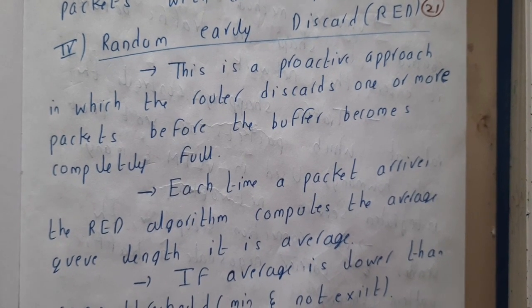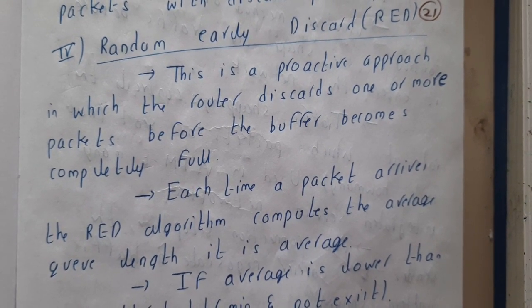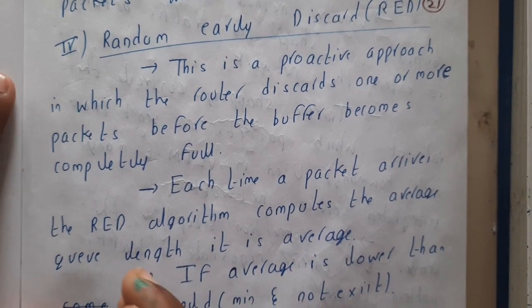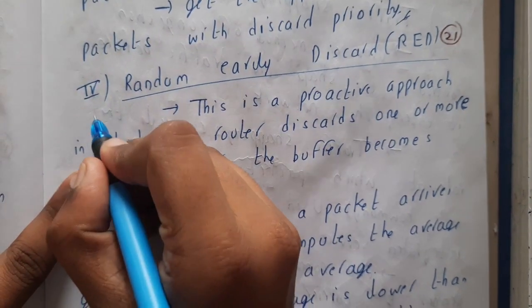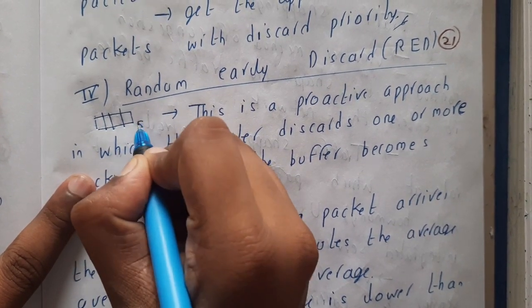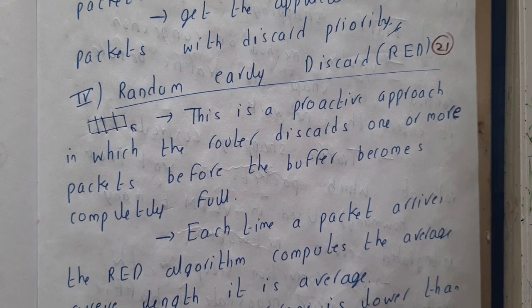Hello guys, we are back with our next lecture. In this lecture, let's go through Random Early Discard. In our last lecture, we went through load sharing, where we have a particular buffer of a particular size. When it becomes completely full, we discard some bits, either the latest coming or the previously stored bits.